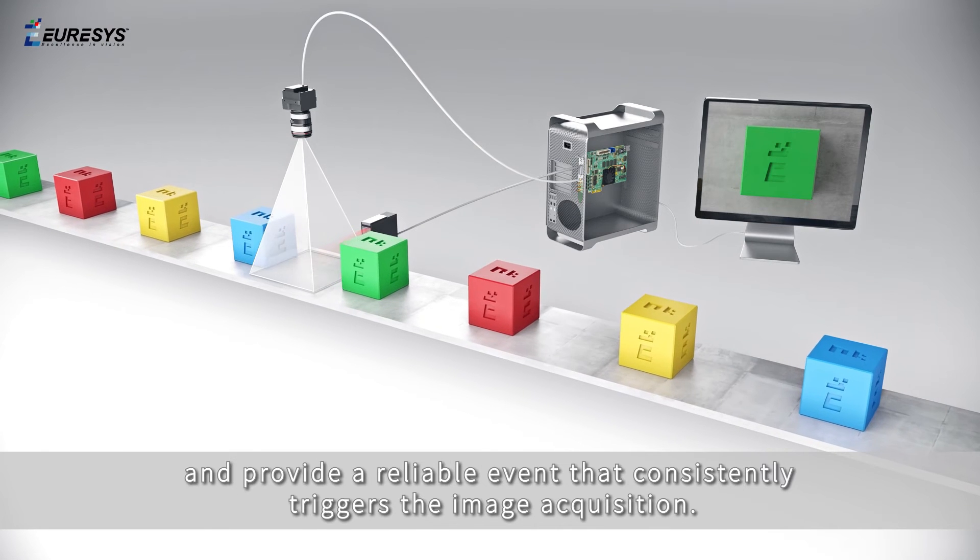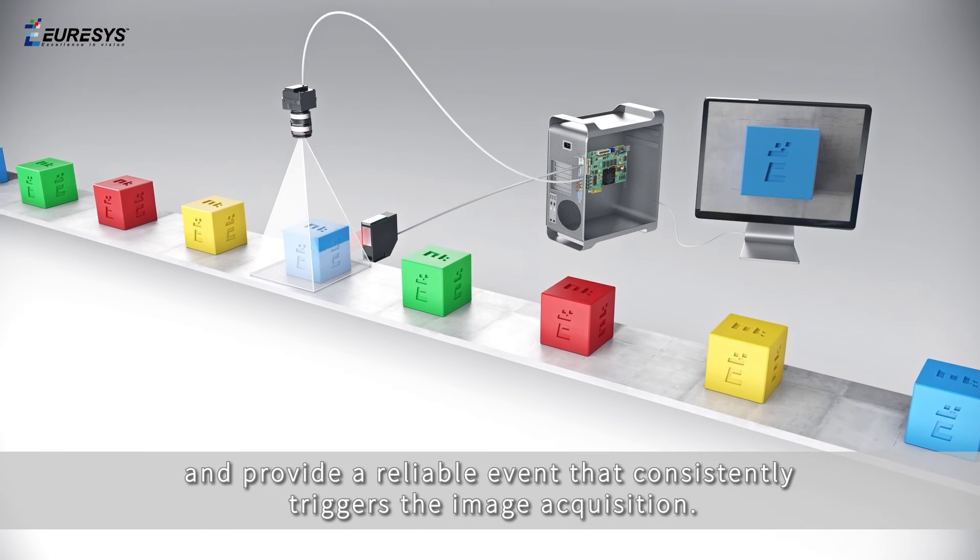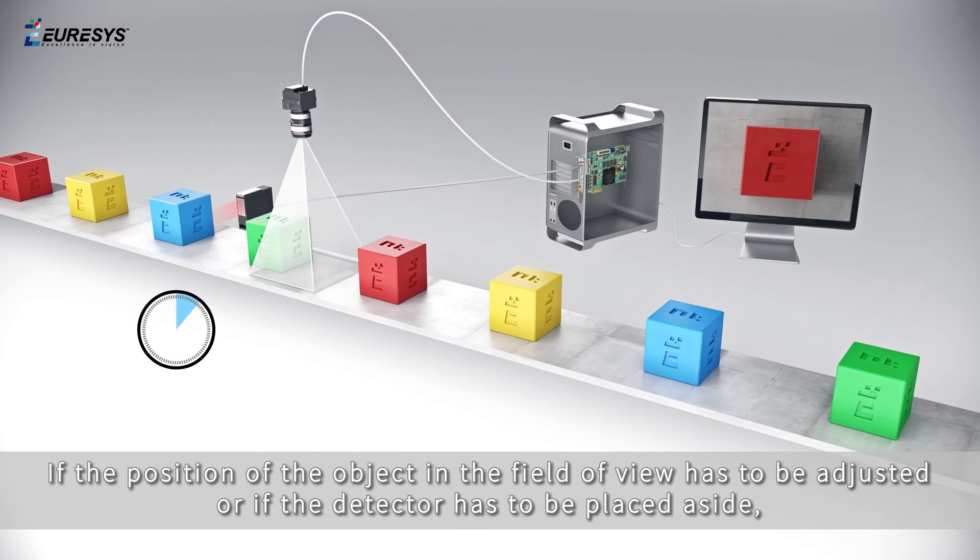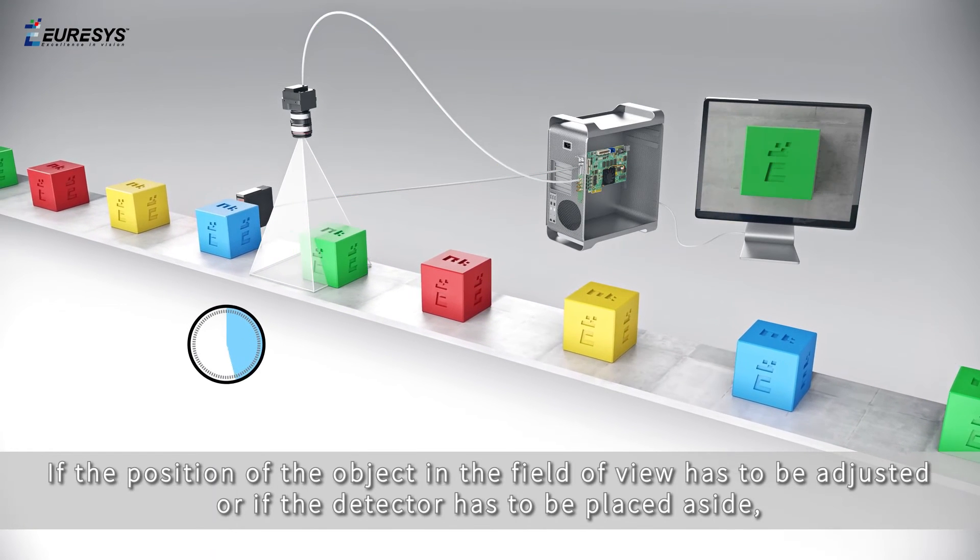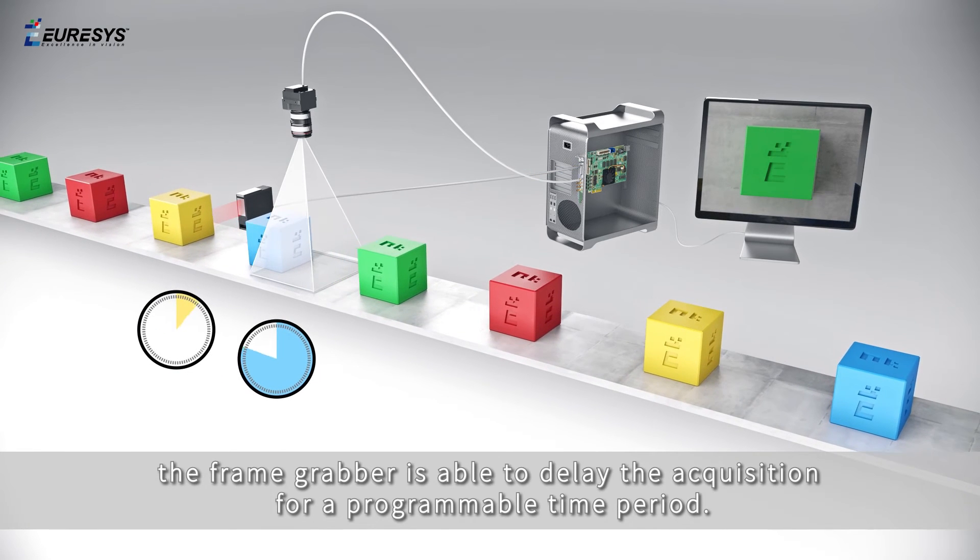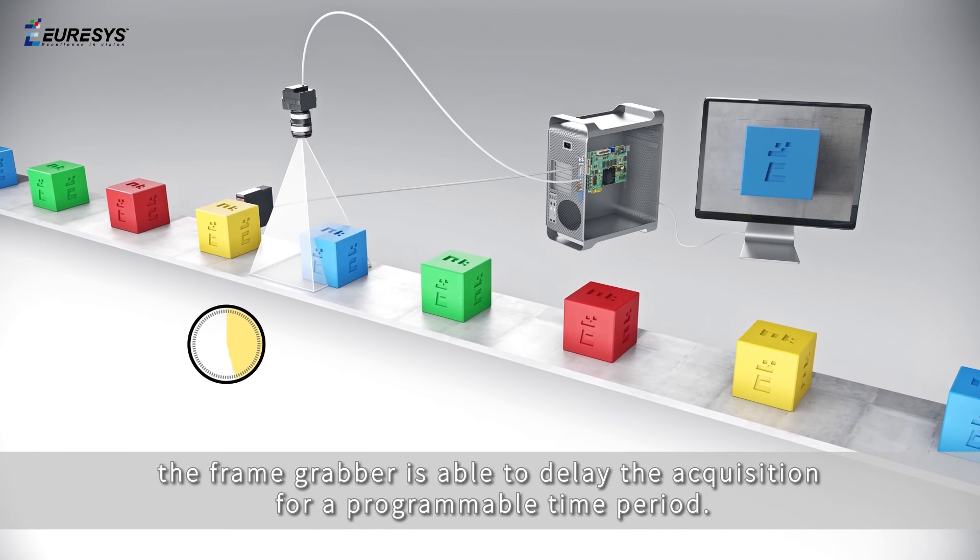And provide a reliable event that consistently triggers the image acquisition. If the position of the object in the field of view has to be adjusted, or if the detector has to be placed aside, the frame grabber is able to delay the acquisition for a programmable time period.